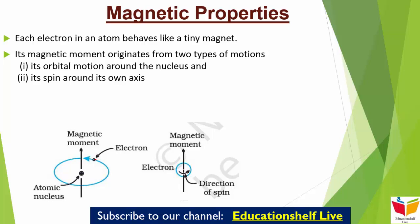पहला motion है orbital motion around the nucleus — मतलब nucleus के around जब electron घूम रहा है। दूसरा motion है its spin around its own axis — खुद की axis के around चक्कर लगाना जैसे Earth लगाती है। इन दोनों की वजह से हमारा magnetic moment originate हो सकता है। Electron एक charged particle है, and undergoing these motions can be considered as a small loop of current which possesses a magnetic moment।